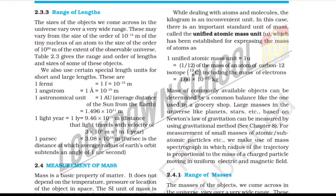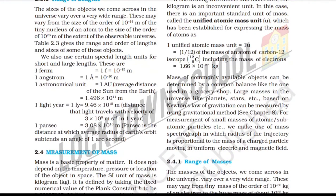For measurement of the mass of atomic and subatomic particles, we make use of mass spectrography, in which the radius of a trajectory is proportional to the mass of a charged particle moving in a uniform electric and magnetic field.